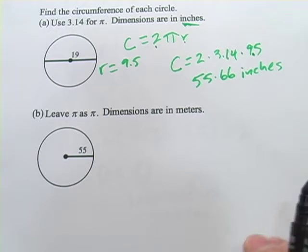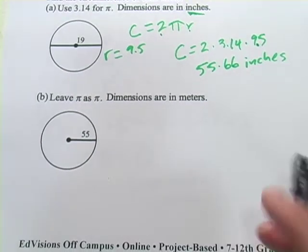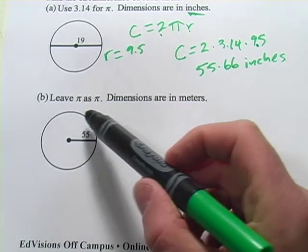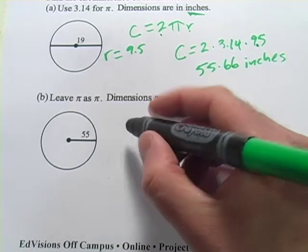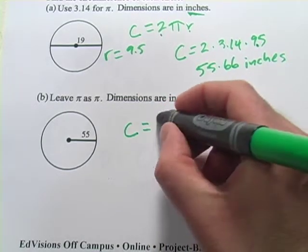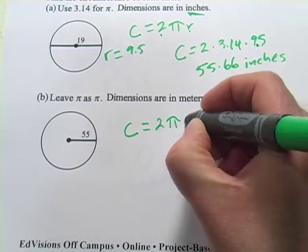Okay, let's do one more. And this, you'll probably see quite a bit as you go on in math. It says leave π as π. So what do they mean by that? Well, let's do this.